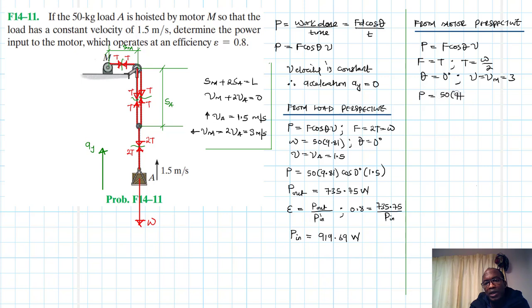Therefore P will just be equal to 50 by 9.81 divided by 2 cos 0 by 3 and our P out we just get the same which is just 735.75 watts.